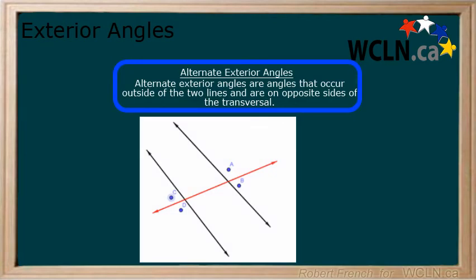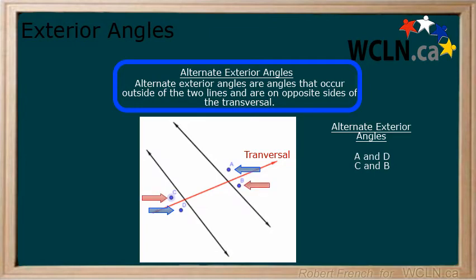Pairs of exterior angles that are on opposite sides of the transversal line are called alternate exterior angles. Here, there are two sets of alternate exterior angles, A and D, C and B.